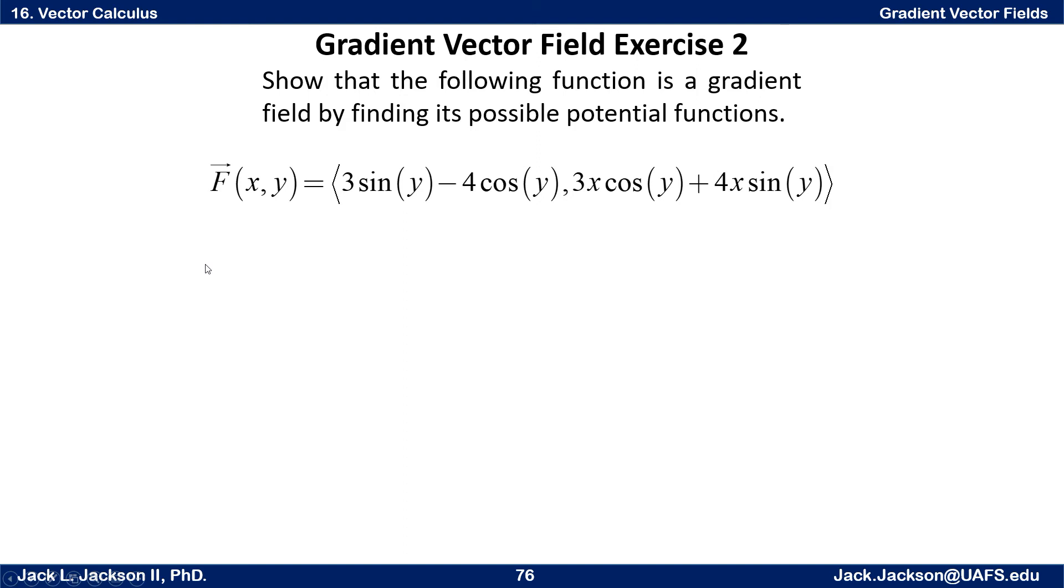Now this time suppose we're given a vector field, and let's show that it actually is a gradient vector field by finding a potential function. Now before we go further, let's note every function is not a gradient vector field. Not every function is what we call a conservative or a gradient vector field. But if it is, it has a potential function for which it is the gradient of. So let's see if we can find that, and basically we're going to be doing some antiderivatives.